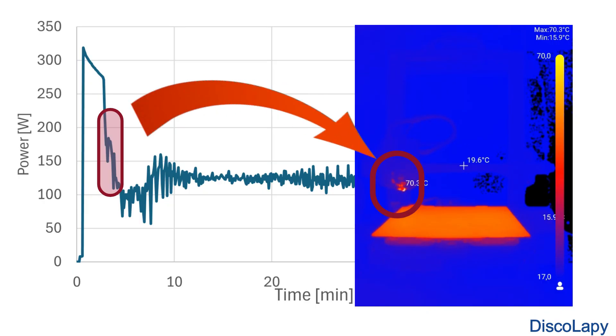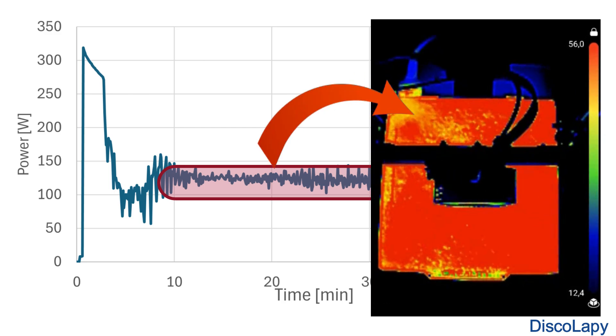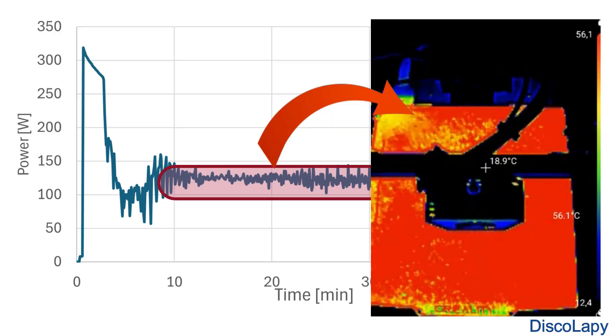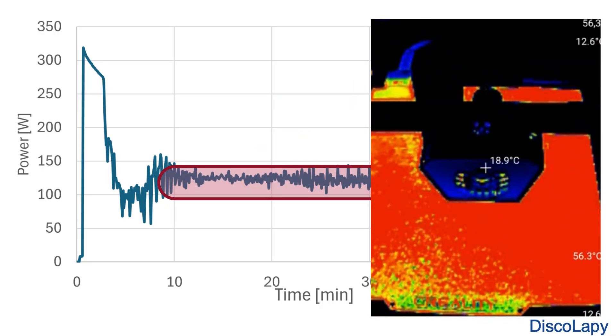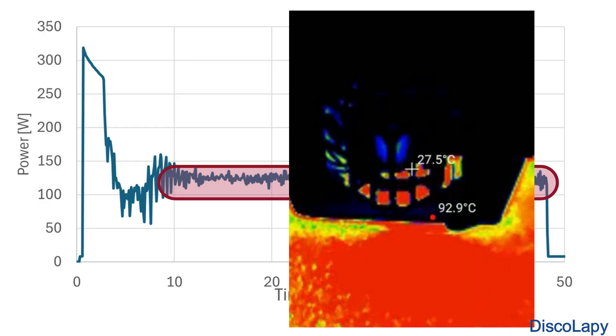Then the motors start moving and the printer begins the actual print with power stabilizing at about 130 watts. From this point on, the printer is mainly maintaining temperature and replacing the heat lost to the surroundings.